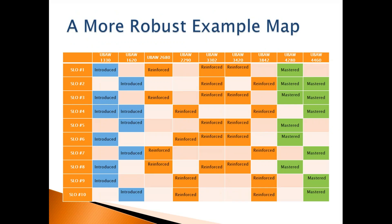Now let's look at a more robust example of a curriculum map. This one still isn't perfect, but it looks more like what a good curriculum map would look like for a program. In this map, we can see that all learning outcomes are being introduced at appropriate points within the curriculum, each outcome is being reinforced to lesser or greater degrees throughout the curriculum, and there's an expectation that students will demonstrate mastery of each learning outcome at a capstone level.